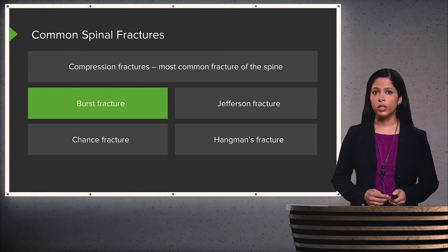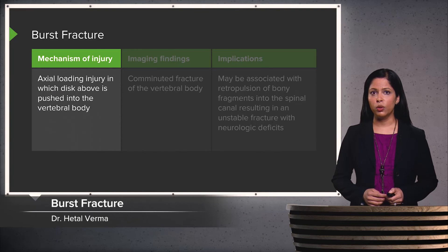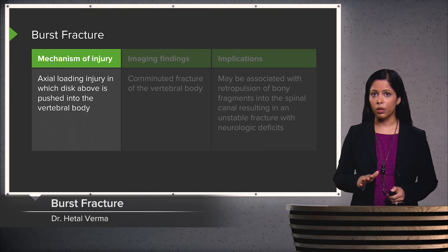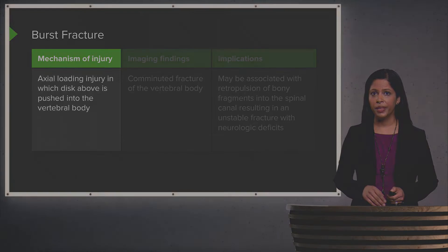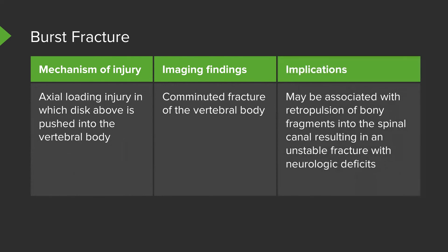We can also have what's called a burst fracture. A burst fracture is caused by an axial loading injury in which the disc above is pushed into the vertebral body below. This can result in a comminuted fracture of the vertebral body, and it's often associated with retropulsion of bony fragments into the spinal canal, which results in an unstable fracture that can cause neurologic deficits.